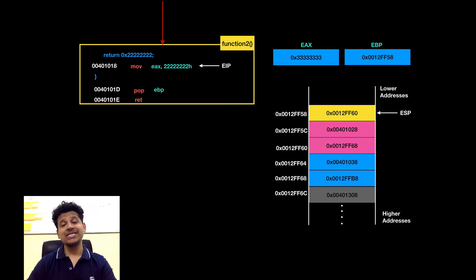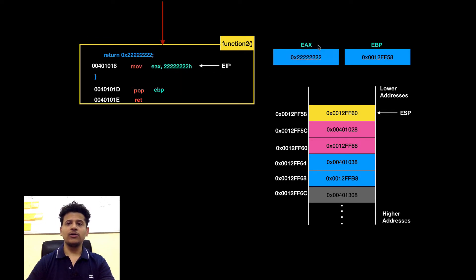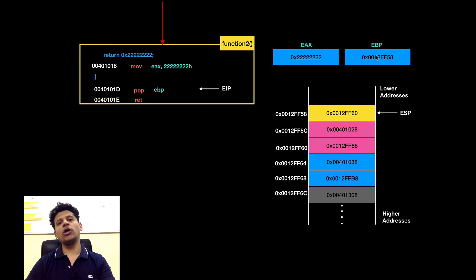We have returned to the same address which we took from the stack. Now function 2 is returning with the 2s: we will move 2s into the EAX, and 2s have been moved into the EAX. Next, function 2 ends here — we will take the top of the stack and put that into the EBP, to give back function 1 its stack frame pointer.